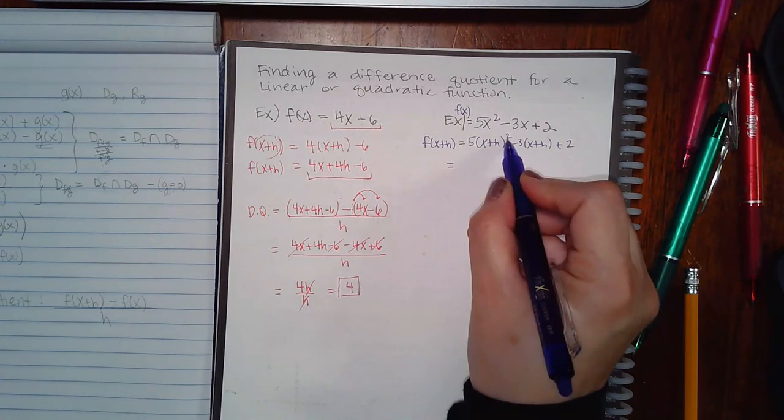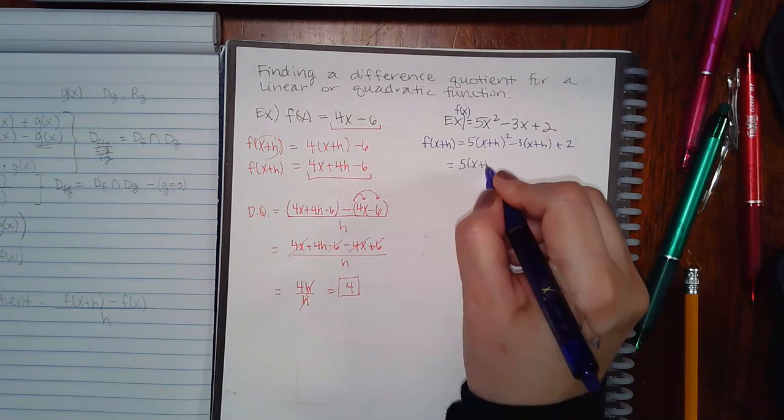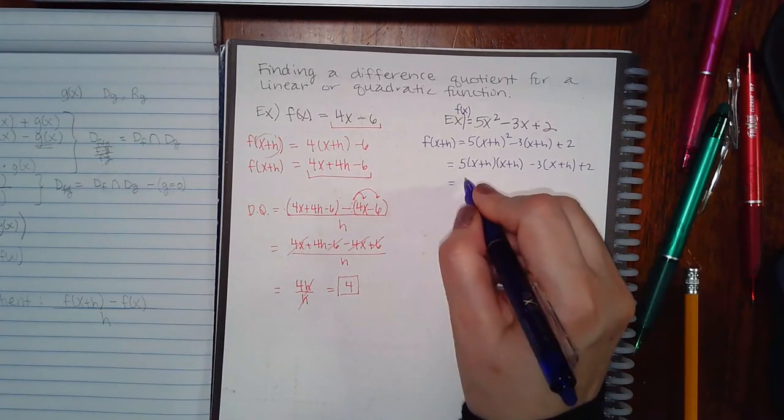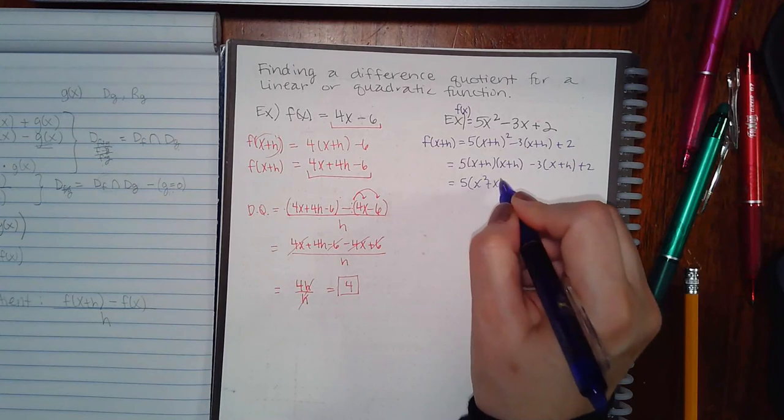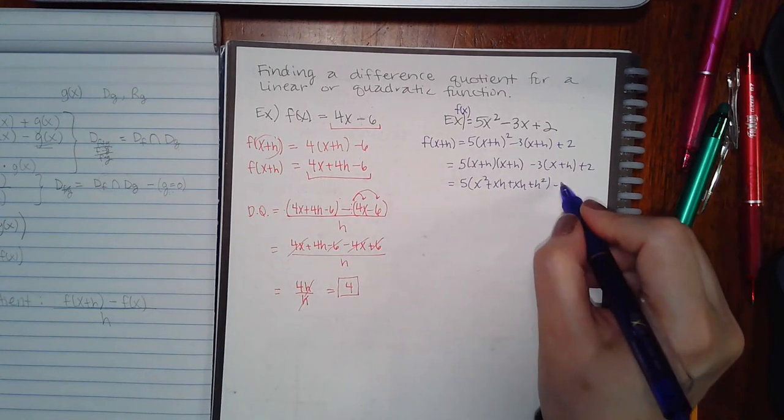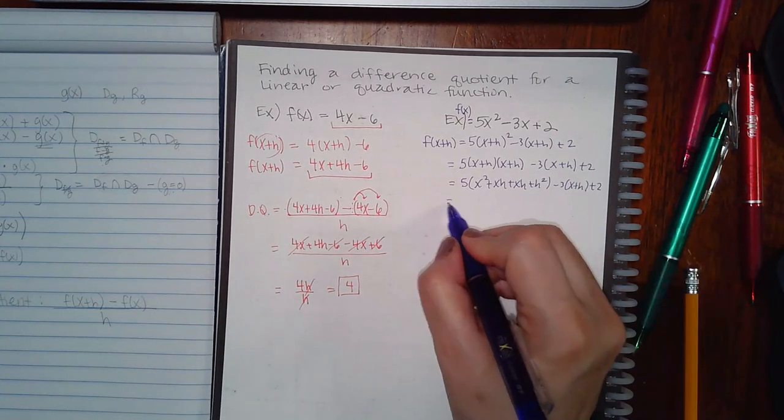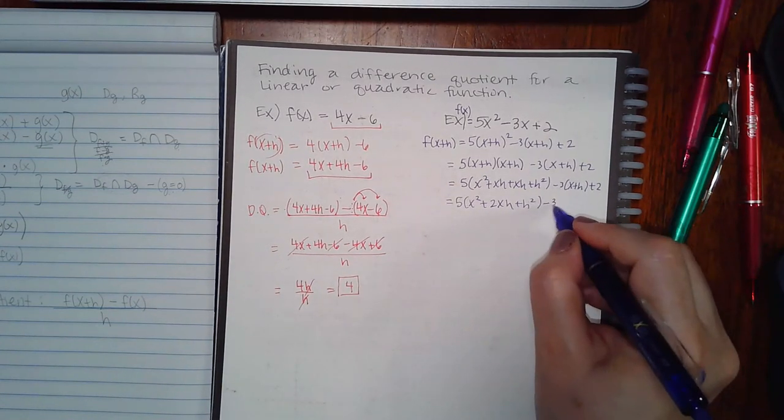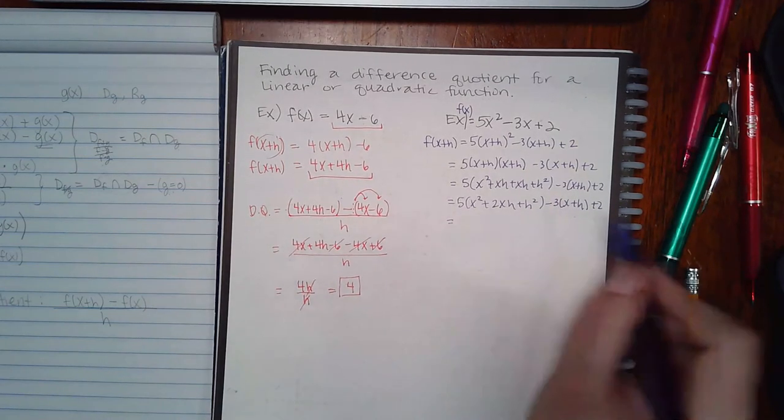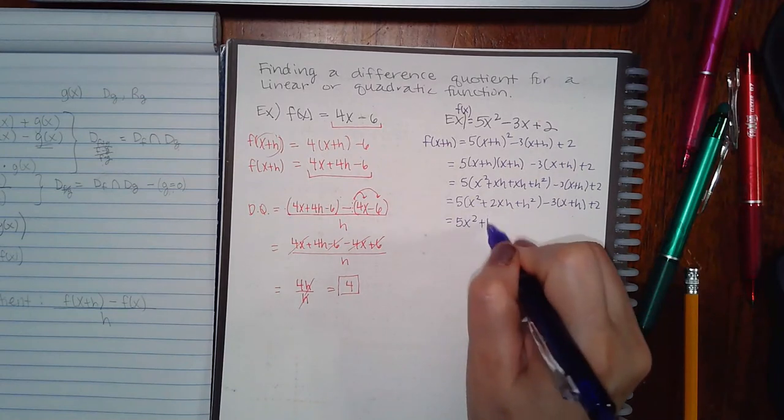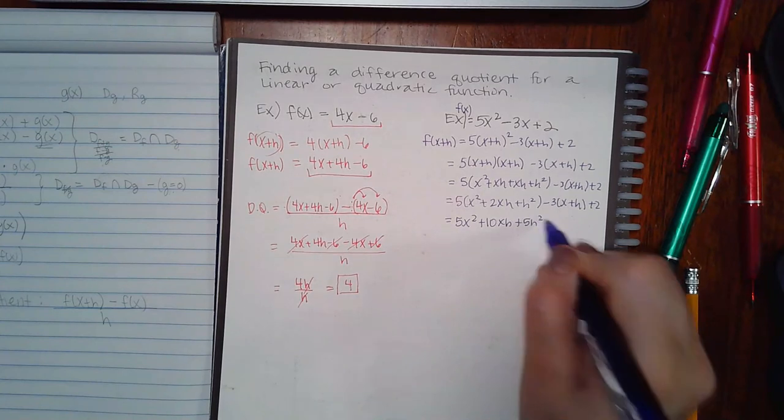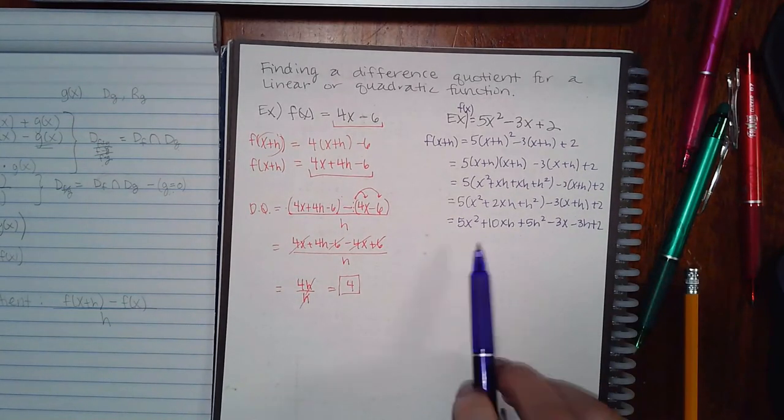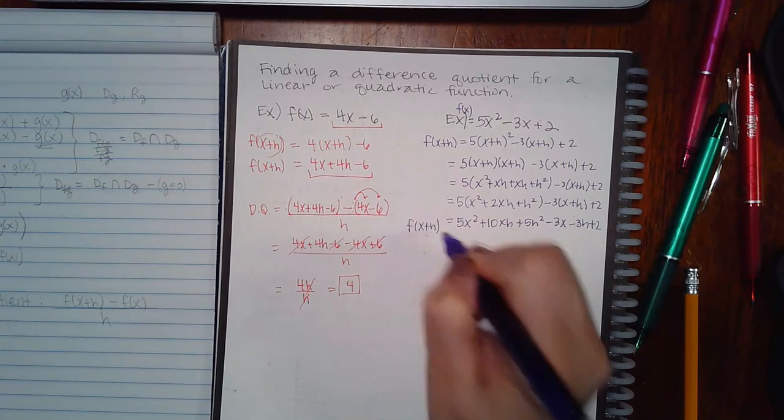I have to apply my exponents before I can multiply. So remember what an exponent means. It means that thing times itself. So I'm going to multiply x squared plus xh plus xh plus h squared. And I'm going to combine my like terms. So I get two xh's. Then finally, I'm going to multiply my coefficients in. So 5x squared plus 10xh plus 5h squared minus 3x minus 3h plus two.